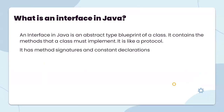The first question is: what is an interface in Java? An interface in Java is an abstract type, not a class. It contains the methods that a class must implement. It is like a protocol — it has method signatures and constant declarations. You can declare a method in an interface but you cannot implement it there; you implement that method inside the class when you use the 'implements' keyword.